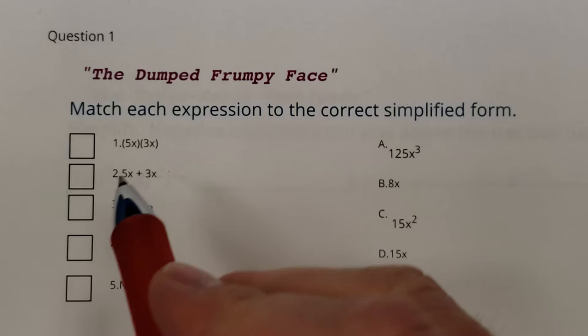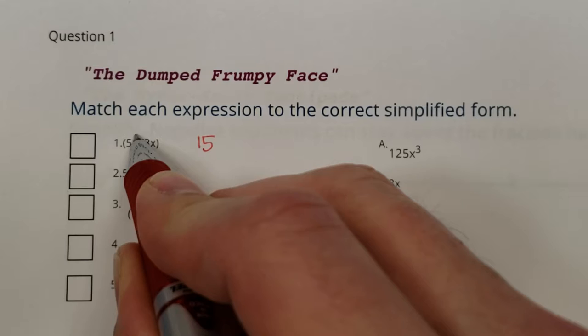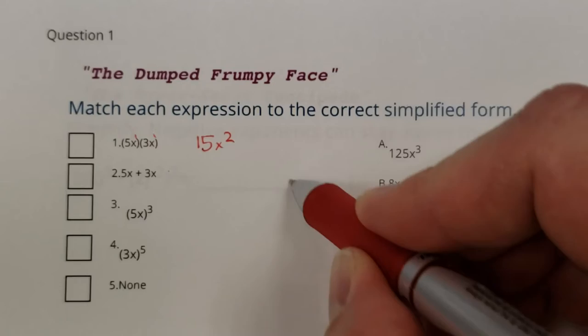So we got to take 5x times 3x. If the big kids do multiplication, that's going to be 15. And then there's x to the 1, x to the 1. So there'll be x squared. So 15x squared. There you are. Gotcha.